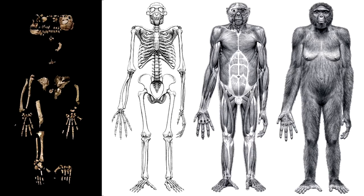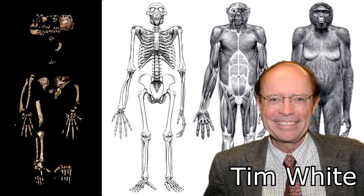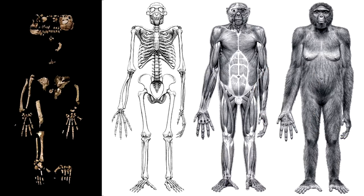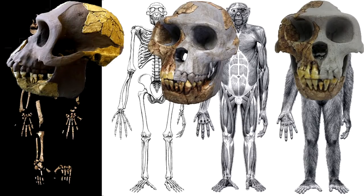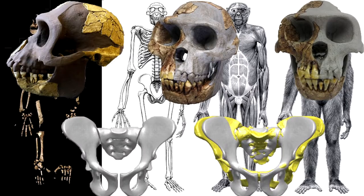One of the oldest members of the hominin family is Ardipithecus ramidus, which lived about 4.4 million years ago. The fossilized remains of a skull and parts of the lower body were first discovered in Ethiopia during the early 1990s by Tim White and his colleagues; since then, more than 100 additional specimens have been discovered. The overall appearance of Ardipithecus ramidus is more chimp-like than human-like — its skull shows a relatively small brain about the same size as a chimpanzee — but the shape of its pelvis suggests it had begun to walk upright at least some of the time, though not as effectively as modern humans.